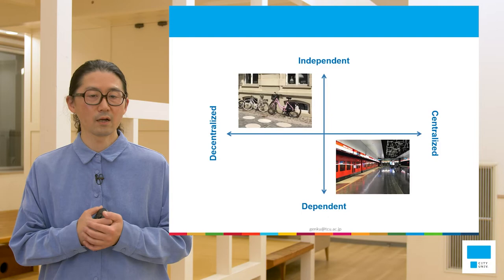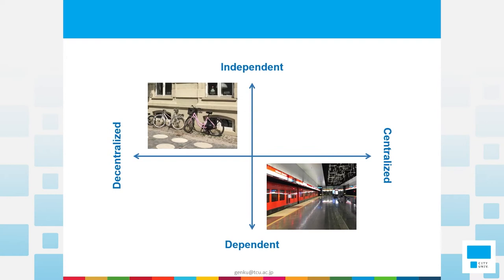With this diagram we can show that public services are centralized and our daily life is depending on that. Together with that, bicycles and private cars support our independent lifestyles when moving around.